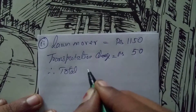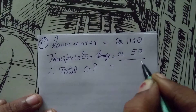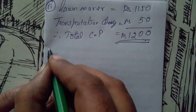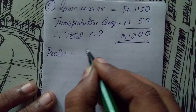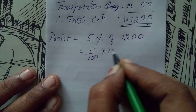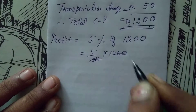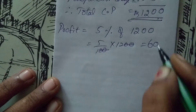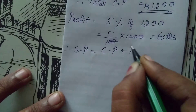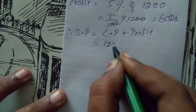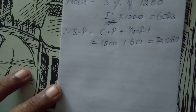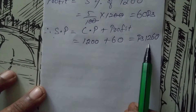In the second subdivision, they have given a lawnmower. Cost is rupees 1,150 and transportation charge rupees 50. Therefore total cost price when we add is rupees 1,200. Profit is 5%, so profit equals 5% of rupees 1,200, that is 5/100 into 1,200. Two zeros get cancelled; 5 twelves are 60. Profit is rupees 60. Therefore selling price equals cost price plus profit: 1,200 plus 60 equals rupees 1,260. The total selling price of the lawnmower is rupees 1,260.